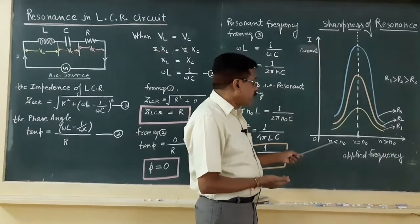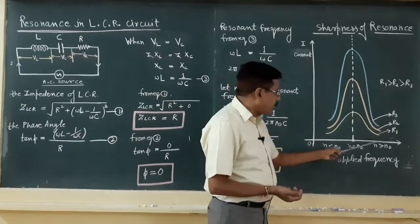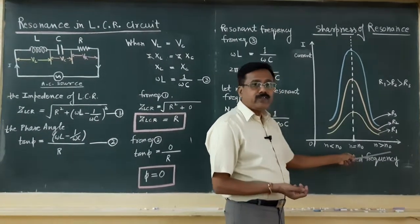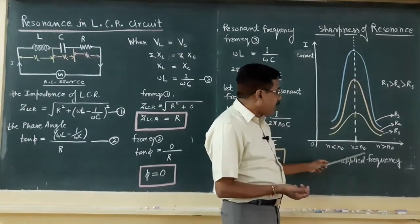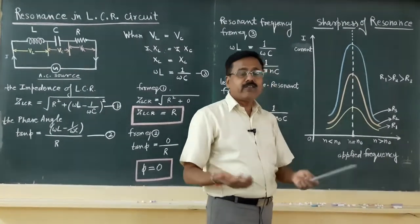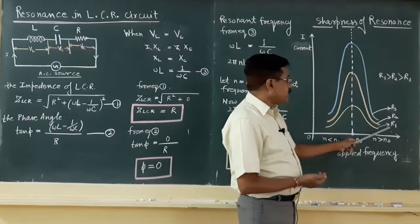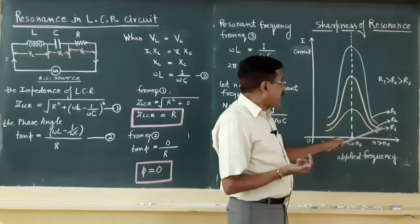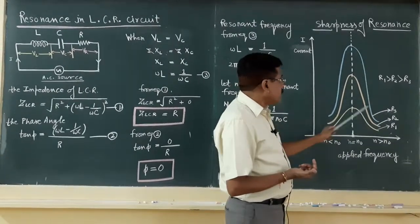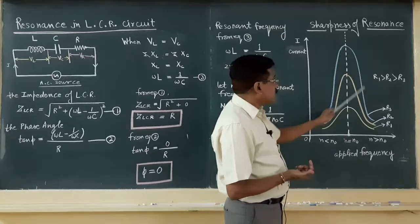Before this, the frequency is less than resonant frequency. Beyond this, the applied frequency is greater than resonant frequency. It means at N equals N_0, the resonance phenomenon took place, current will be maximum. We have three curves for value of resistor in the LCR circuit. At R1 we have this yellow curve, when R2 we have this orange curve, R3 we have this curve.